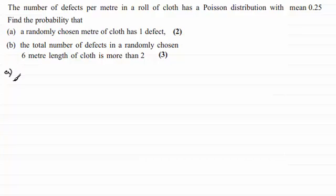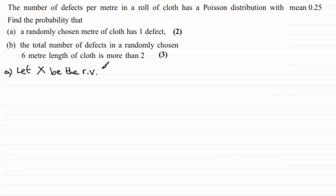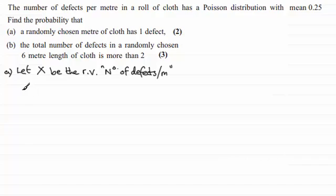For part A, what we need to do is define a random variable for the Poisson distribution with a mean of 0.25. We can use any letter — I'm going to use X. Make sure it's a capital letter for random variables. So let X be the random variable — RV for short — representing the number of defects per meter. X is distributed as a Poisson distribution with a mean of 0.25.